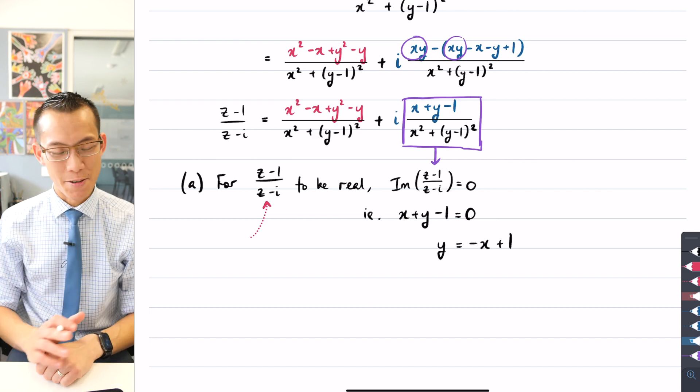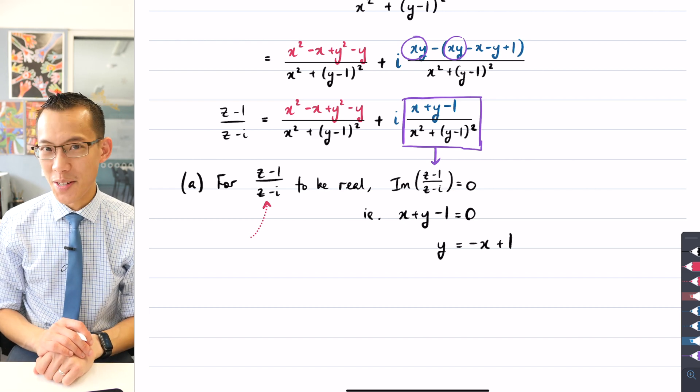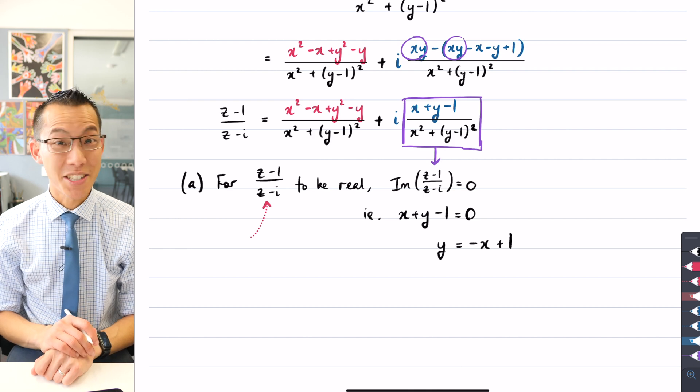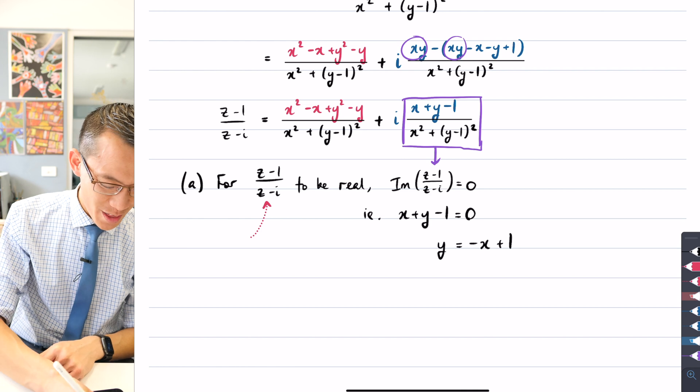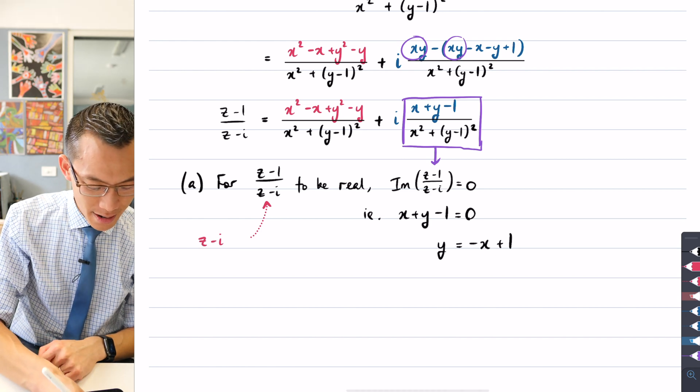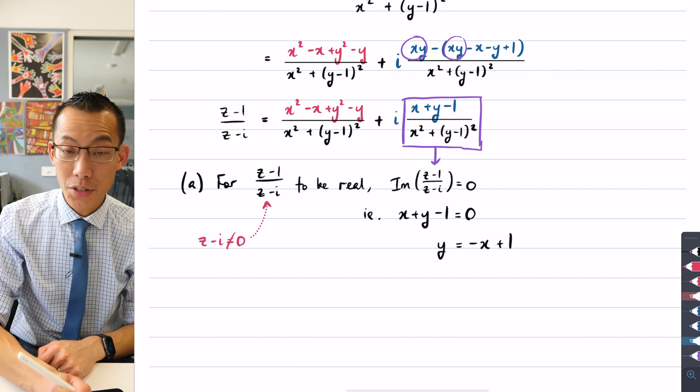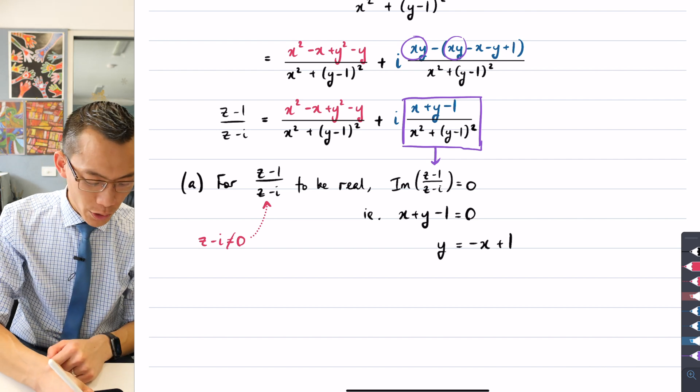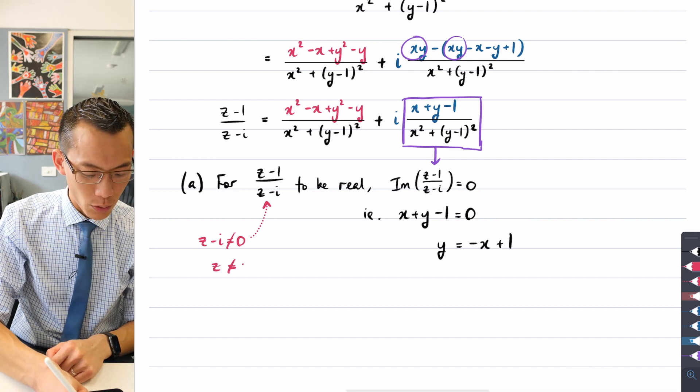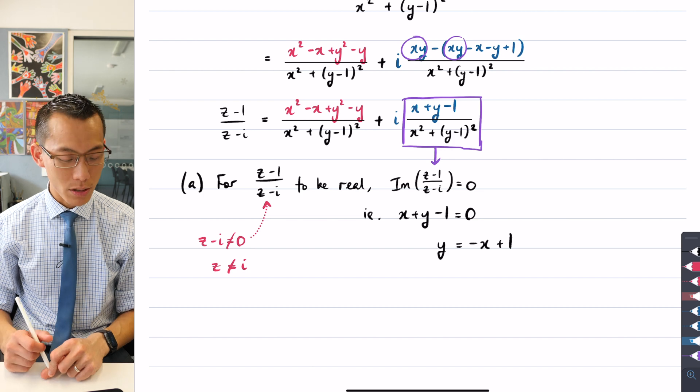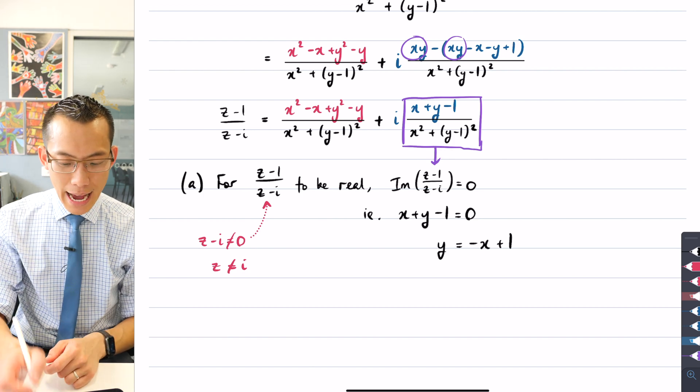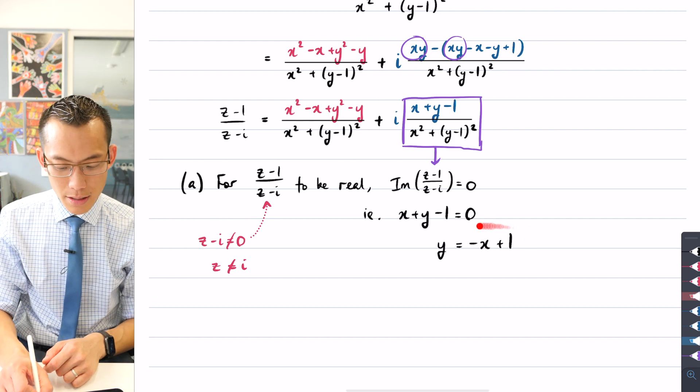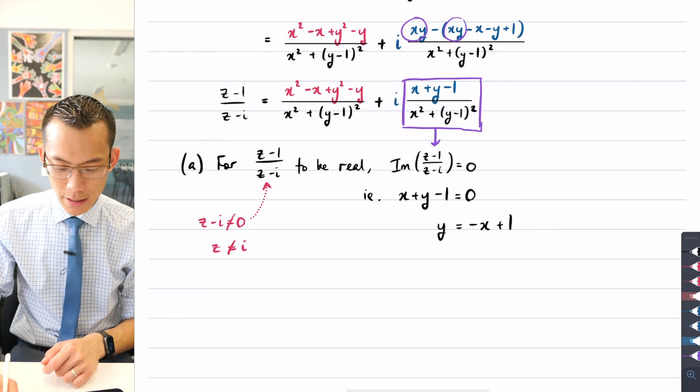z minus i can never be zero, because you can't divide by zero. We have learned in complex numbers you can take square roots of negative numbers, still not allowed to divide by zero. So z minus i cannot equal zero, but we could equally write that as z cannot equal i. Now the reason why this is important is because that complex number i is actually going to be on this line.